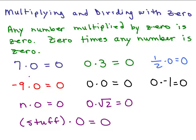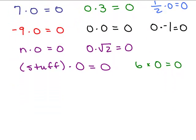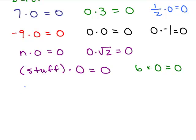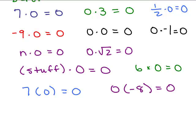You don't have to use a dot to show multiplication — all of these could be written a little bit differently. You could use a little times sign that looks like a little x — six times zero is also zero. You could also use parentheses for multiplication. If you have seven and then a parentheses zero, that means seven times zero. Or you might have zero and then a parentheses negative eight — that also means zero. The important point is that if you have zero times anything or anything times zero, your answer's going to be zero.